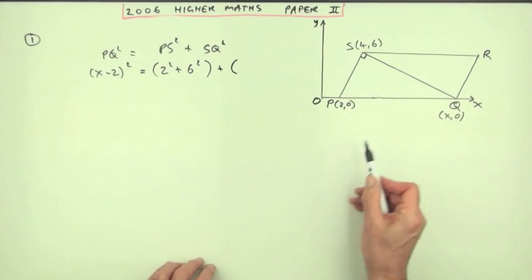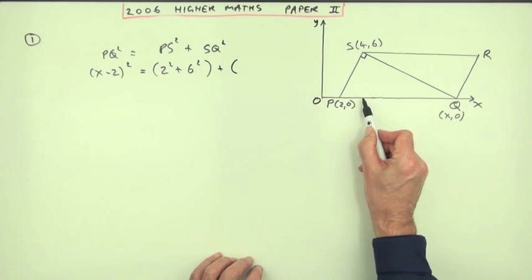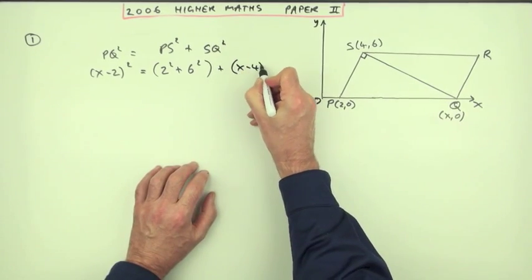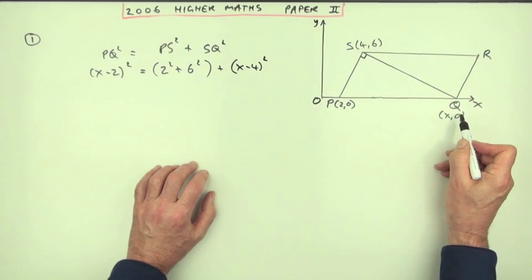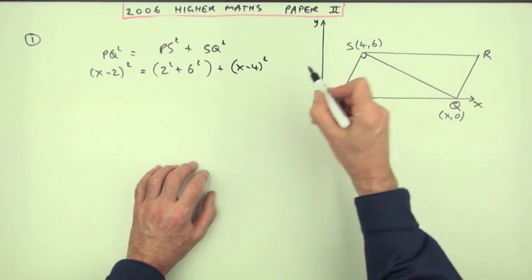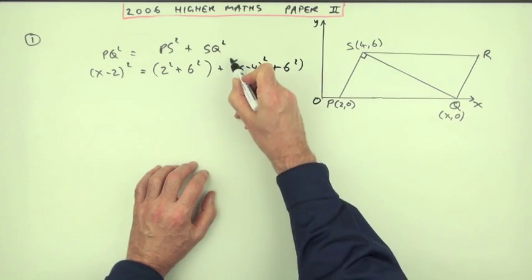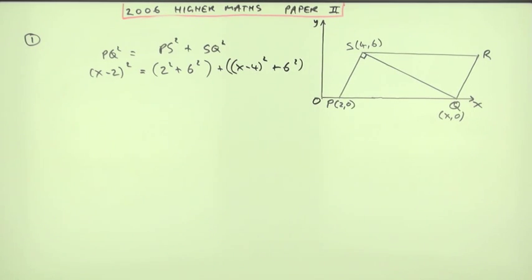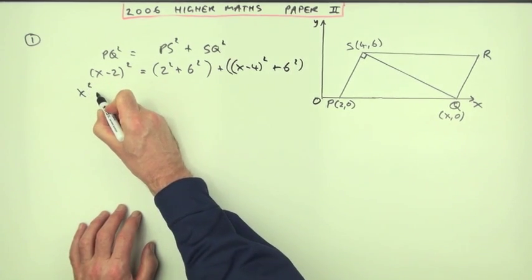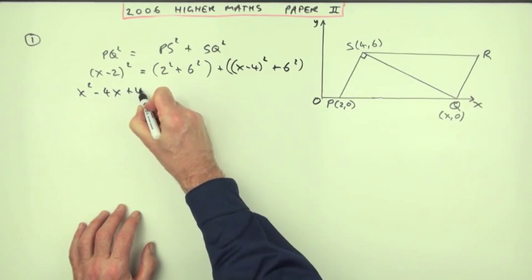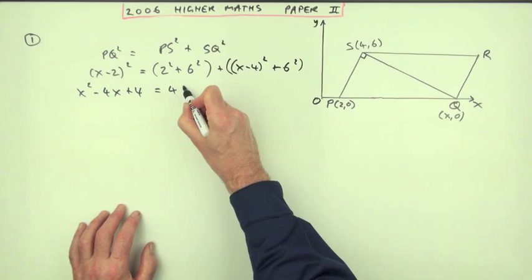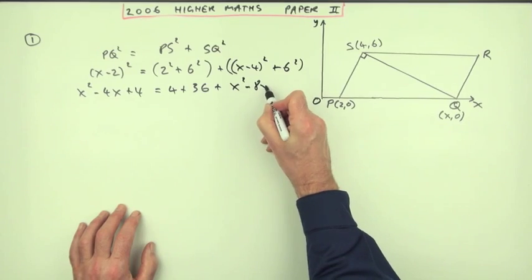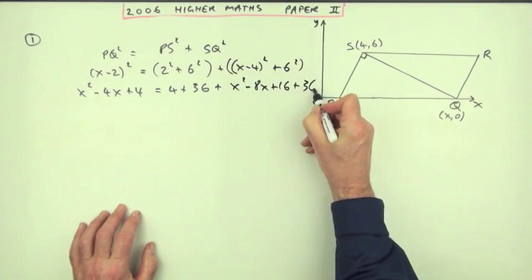We'll just bracket them to show the two separate parts. What about SQ squared? Same again. You've got your own little right-angle triangle. Difference in the X's squared would be, it goes from 4 to X, so it'd be X minus 4 squared. Difference in the Y squared, and it doesn't matter which direction you're going because I'm squaring it, 0 to 6 is a 6 squared. Now, there's quite a lot of work in doing this because those brackets aren't the same, so I'll need to expand them. So here I've got, squaring the bracket, X squared minus twice the product, 4X plus 4 equals, get all these numbers together, that's a 4 and a 36. Multiplying out this bracket, X squared minus twice the product, 8X plus 16, and there's another 36.